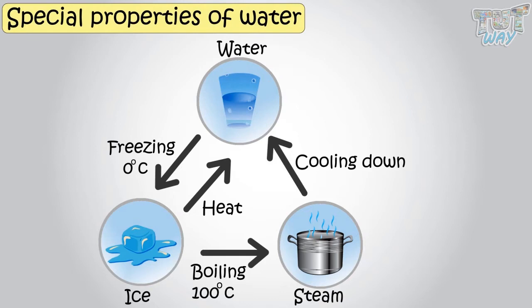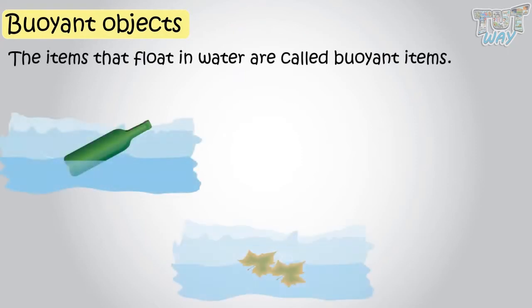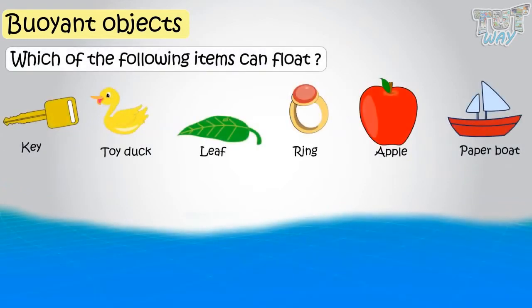Now let's see what are buoyant objects. The items that float in water are called buoyant items. Here are a few things. Let's see which of the following items can float.